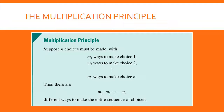So the multiplication rule says: suppose that N choices must be made, with M1 ways to make choice one, M2 ways to make choice two, and so on until we get M sub N ways to make choice N. Then there are M1 times M2 all the way down to M sub N different ways to make the entire sequence of choices. In other words, you multiply the different ways to make each choice together.